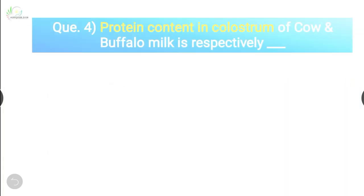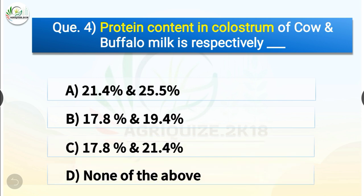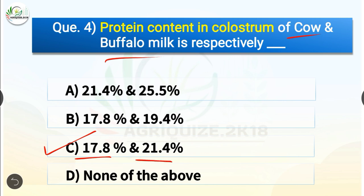Question number 4. Protein content in colostrum of cow and buffalo milk is respectively dash. The options are 21.4% and 25.5%, 17.8% and 19.4%, 17.8% and 21.4%, or none of the above. The correct answer is option C, 17.8% and 21.4%. So protein content in colostrum of cow and buffalo milk is 17.8% and 21.4% respectively.